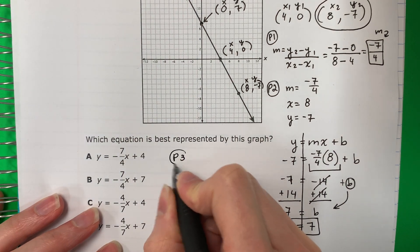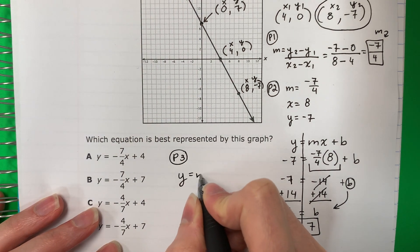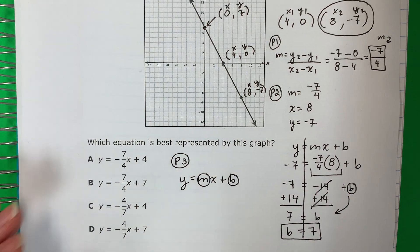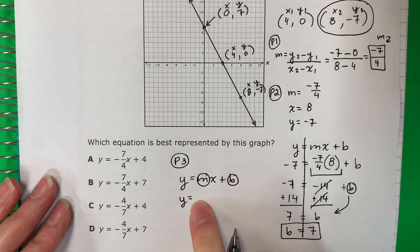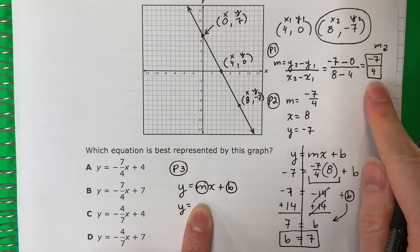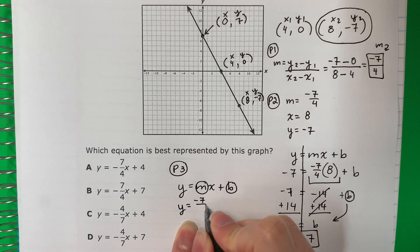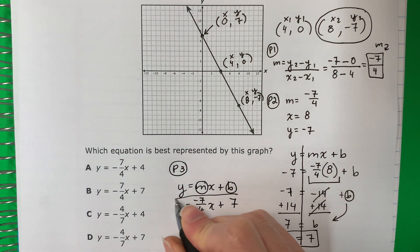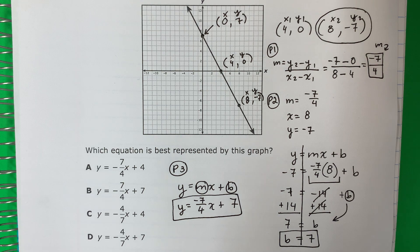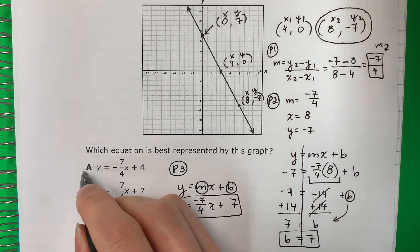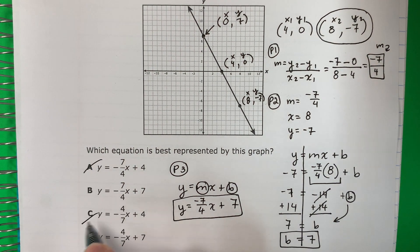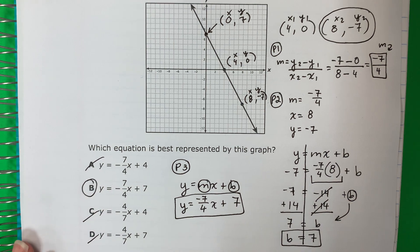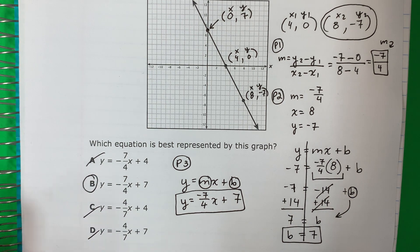Part three, I'm going to go ahead and just do it right here. I have Y equals MX plus B. So at the end, you only change M and B. So Y equals M. My M is this one right over here. Negative seven fourths. Copy X. Copy plus. B is seven. This is your answer. So it looks like my answer is B. Y equals negative seven fourths X plus seven. So that is the first way to do it. The long way. But it always works.